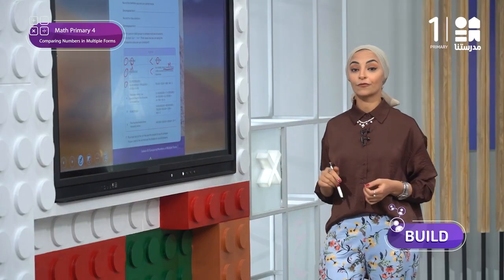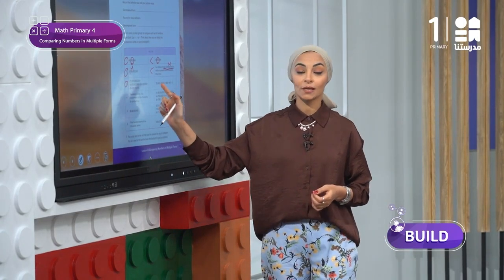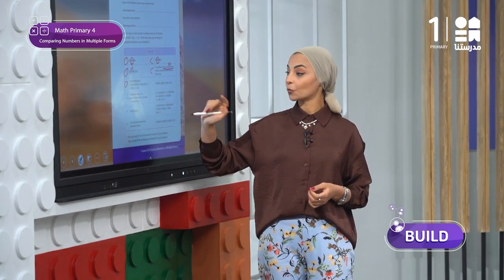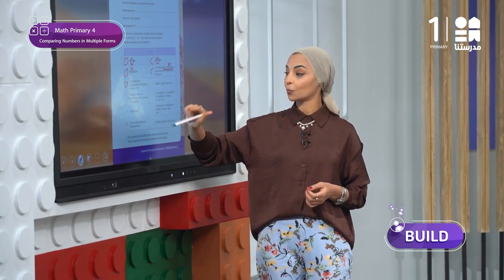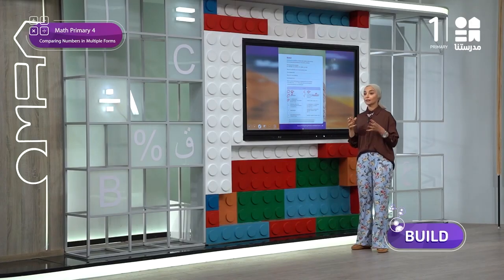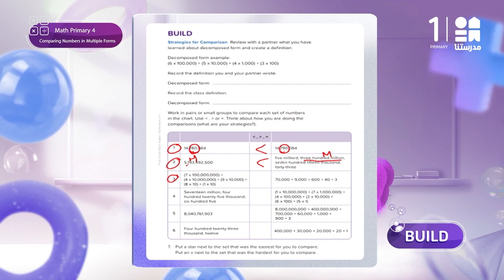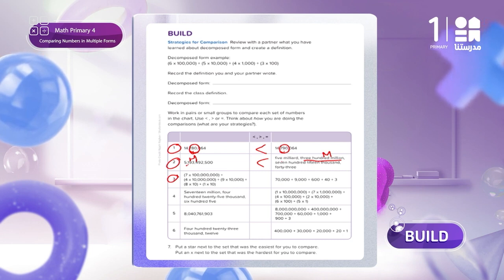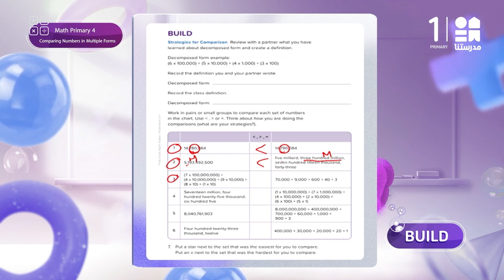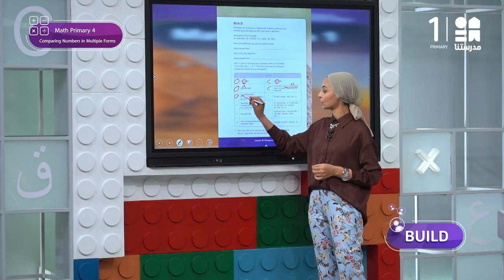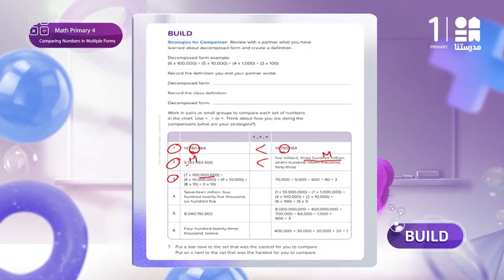In question number three, we will find that the first number is in decomposed form — decomposed by multiplication — where you write the value of each digit using multiplication. While the second one is in expanded form. The difference between decomposed form and expanded form: expanded form is without multiplication, decomposed form is with multiplication. By noticing the greater period, we will find that the place value for the first number is 7 multiplied by 100 million.